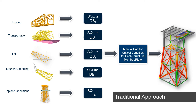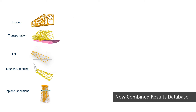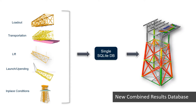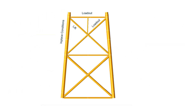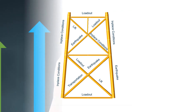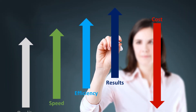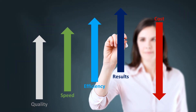The new SACS combined results database functionality now stores analysis results from different design phases into a single database. This new functionality allows the engineer to instantly view which design phase governs the design of each member and each joint.